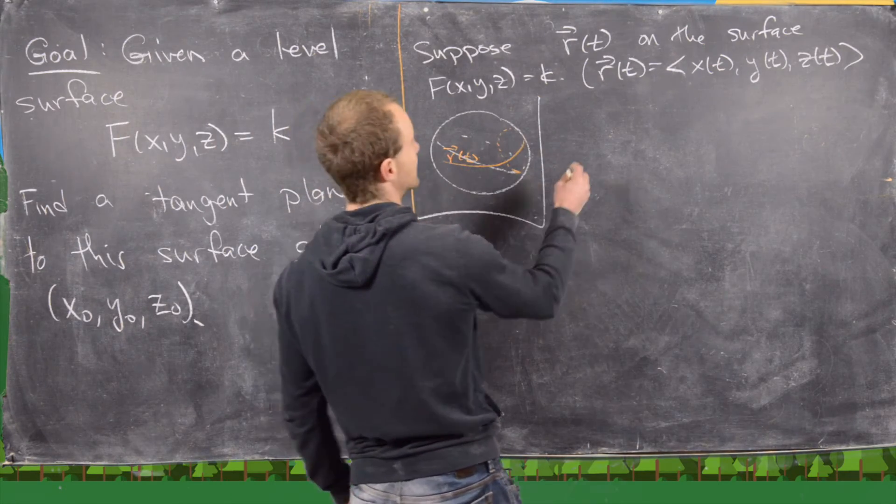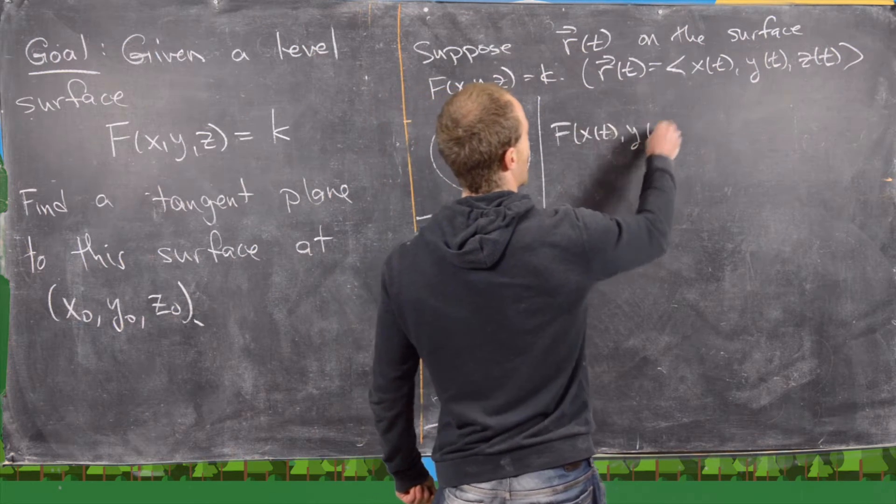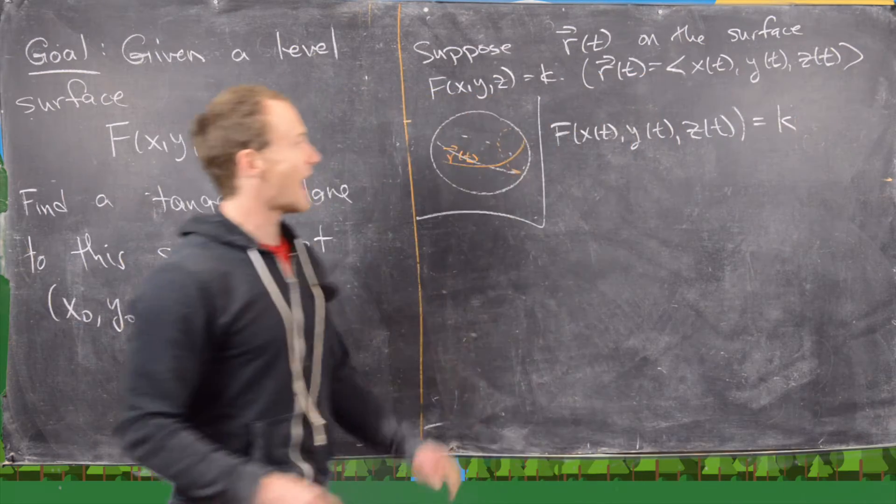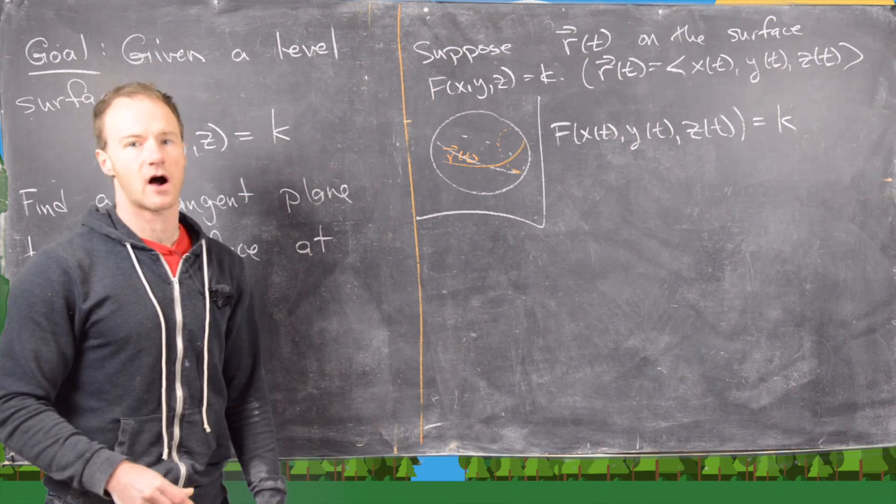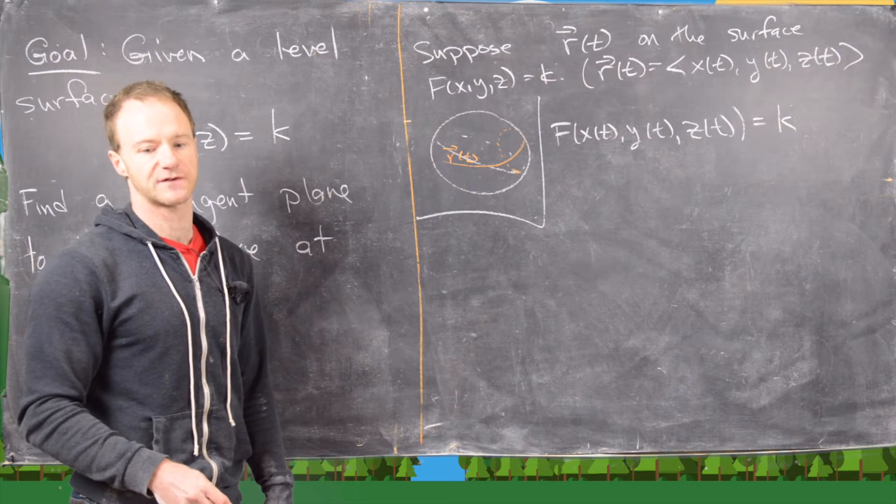So now notice what that gives us is that f of x of t, y of t, z of t equals k. We know that because the curve is lying on the surface, so every point on the curve satisfies this surface equation.